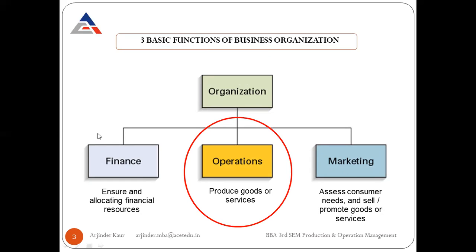Operations is a central function to every business organization. If no operations are there — if we are not transforming inputs into outputs, if we are not producing something — then why do we need marketing or financial resources? Financial resources are required to run the operations of an organization. These operations could be manufacturing, or in service organizations where no manufacturing is undertaken, they still transform inputs into meaningful outputs. Marketing is only required if we have produced something.